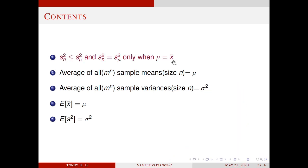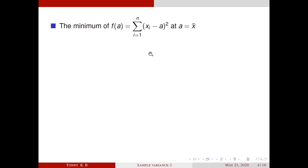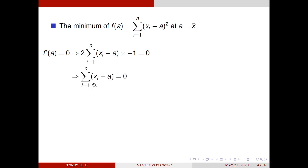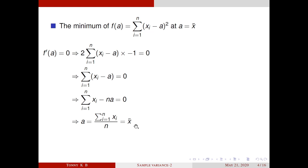First, we will prove the inequality used in the previous lecture for establishing the first observation. For this, we have to prove that the minimum of this function is at x̄. We find the critical points by setting f'(a) = 0, that is, 2 · Σ(xi - a) · (-1) = 0, so Σ(xi - a) = 0. Expanding, we get Σxi - na = 0, giving a = Σxi/n, which is x̄. So this function has only one critical point at x̄.